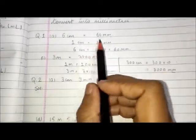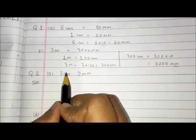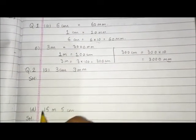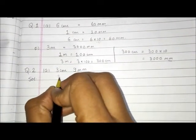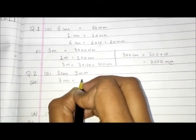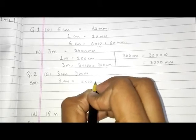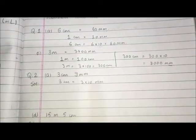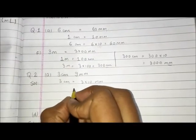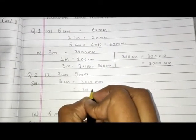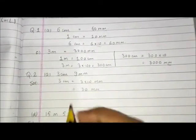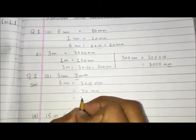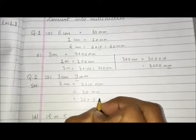Next, 3 centimeters 9 millimeters — we convert into millimeters only. We have to convert the 3 centimeters and then add the 9 millimeters. In 3 centimeters there will be 3 into 10 millimeters, so 3 into 10 will be 30 millimeters. Then we add 9 millimeters, so this becomes 30 plus 9, that means 39 millimeters. This is the answer.